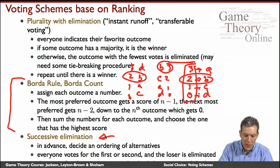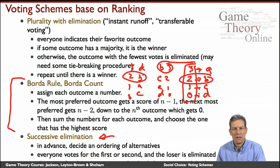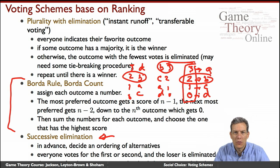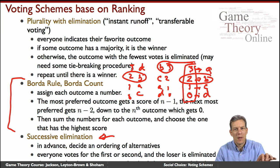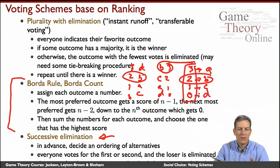Another rule is successive elimination. You order the alternatives and first have a vote over the first two — do we prefer A or B? The winner is matched against C, then against D, and so forth. This is often used in legislatures: first vote on the amendment to the amendment versus the amendment, then the winner faces the original bill, and finally bill versus no bill.